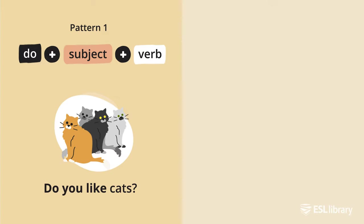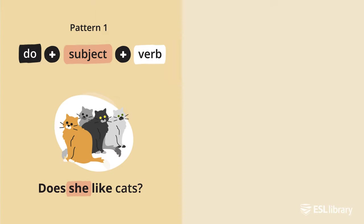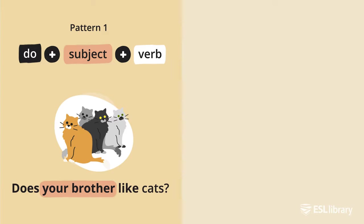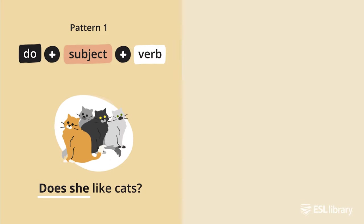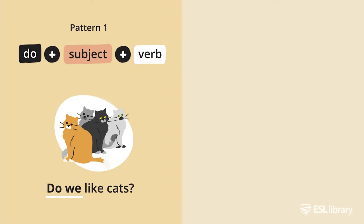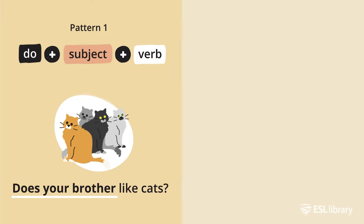Note that we use 'does' when the subject is he, she, it, or a singular noun. For example: 'Do you like cats?' — do I, does he, does she, does it, do we, do they, does your brother, do your brothers.